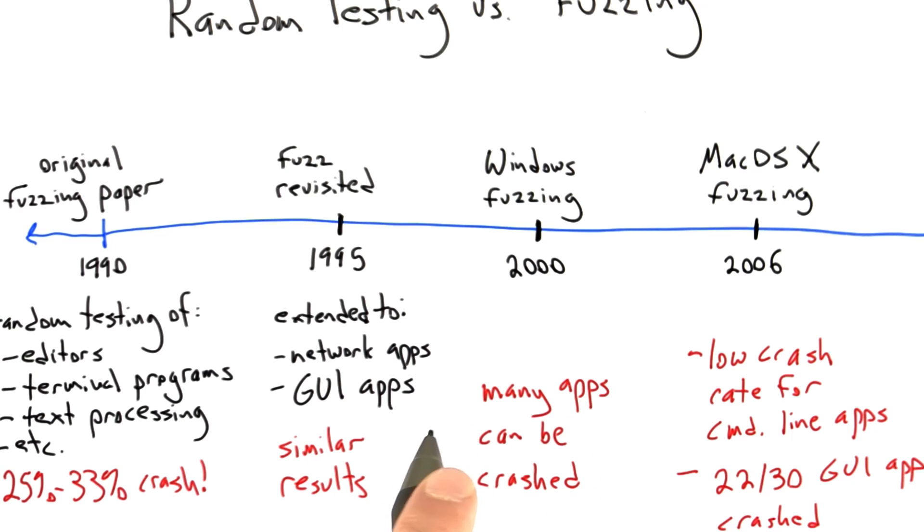So now what I've covered so far is this particular random testing effort by this one research group. But something interesting happened, I believe sometime around 2000 or a little after, is the term fuzzing took on another use.